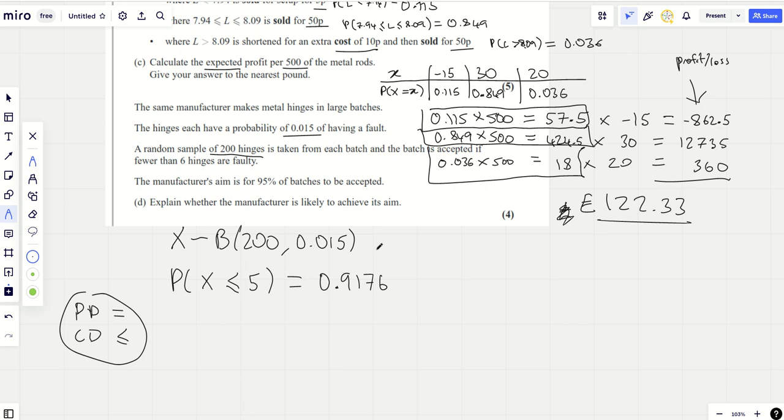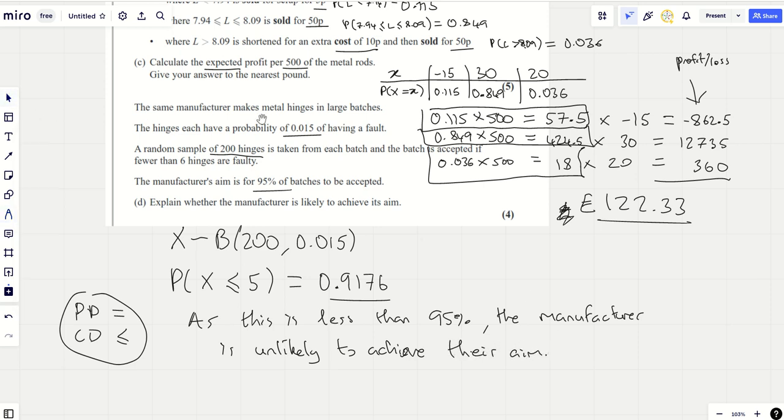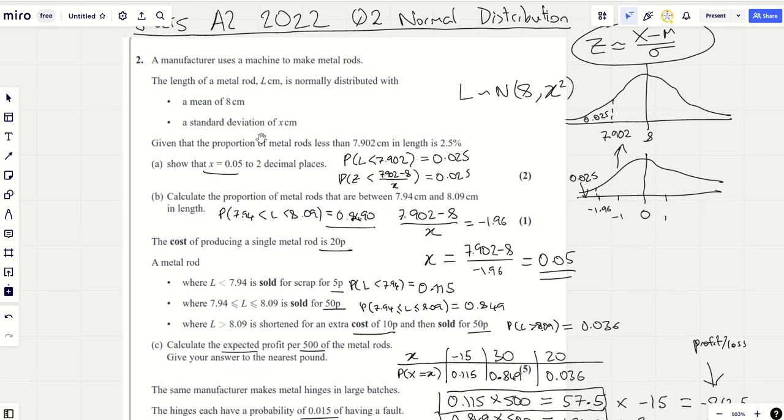That's interesting. That is not 95%. As this is less than 95%, the manufacturer is unlikely to achieve their aim. That's a good example of where they like to stretch you by introducing binomial distribution at the end of a normal distribution question or vice versa. They like doing that, it's to keep you on your toes. I thought the expected profit bit was the hardest bit of that question. That's not an easy bit.